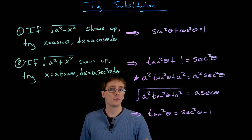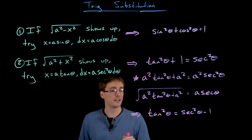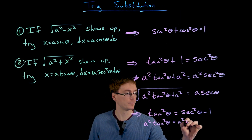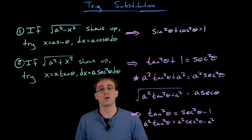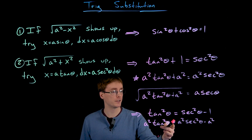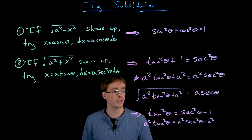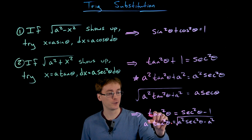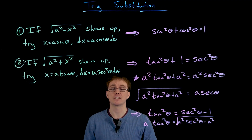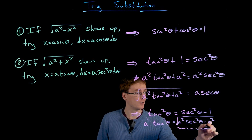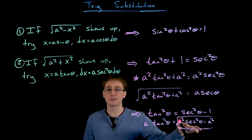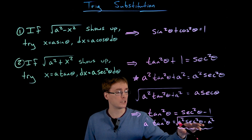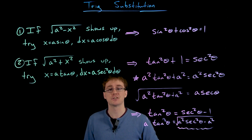We can form a more general version of this identity by multiplying both sides by a constant squared, say a². That gives a² times tangent squared equals a² times secant squared minus a². Taking the square root of each side, the left-hand side simplifies — the powers of two cancel — and we get a times tangent of theta. So if we make a secant substitution, this identity allows the square root quantity to be rewritten without the square root as just a times tangent of theta.